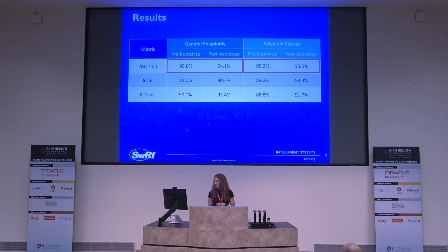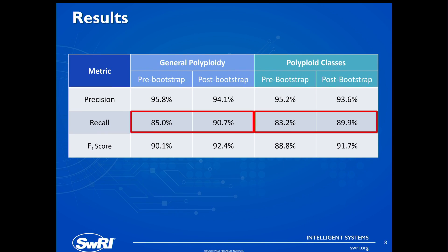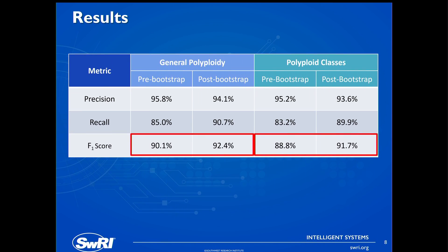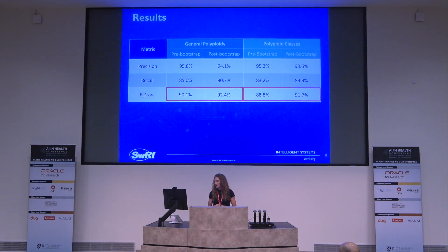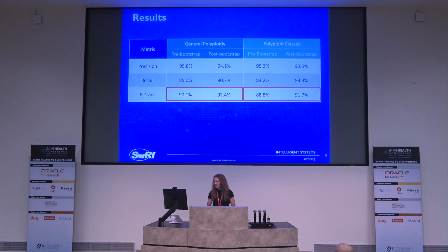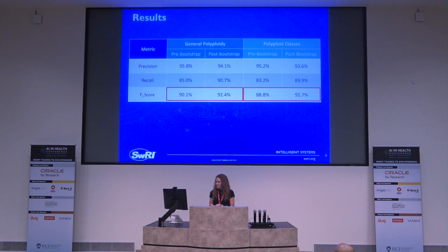Bootstrapping did not improve precision — in both cases it decreased by about 1-2% — but it did greatly improve recall by 5-6%. The F1 score, which combines precision and recall because they tend to be inversely related, improved after bootstrapping in both scenarios. In medical applications, false negatives carry more weight than false positives, so the improvement in recall is a particularly good outcome.